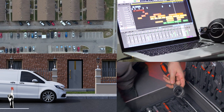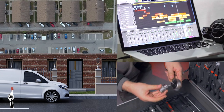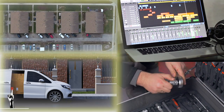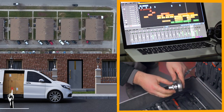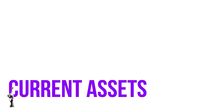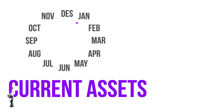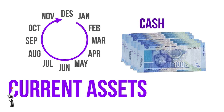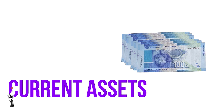Time is up. Current assets are assets whose life expectancy is shorter than a year, and they can very easily be converted into cash or are cash itself. Examples of this are petty cash or the cash itself.